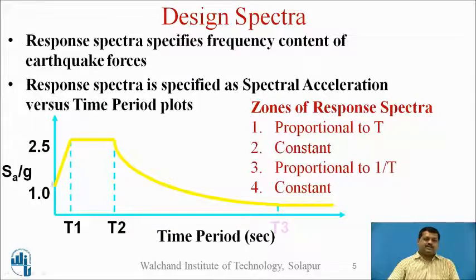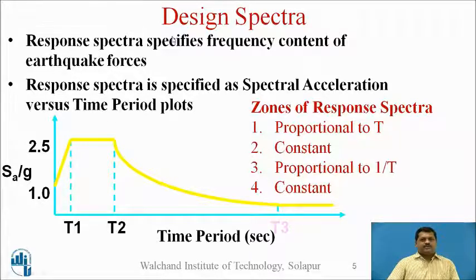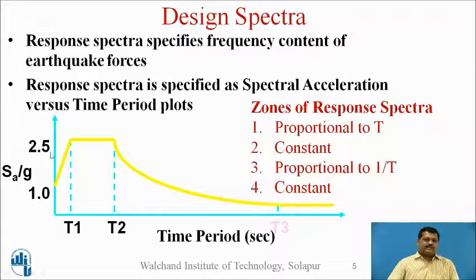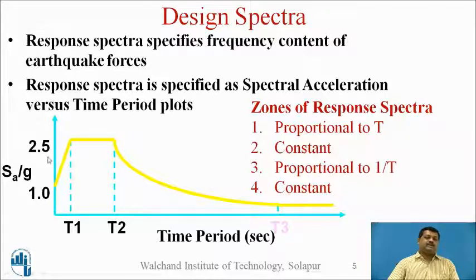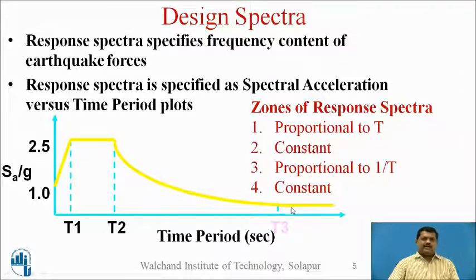Now let us see this design spectra. This design spectra is explained in IS 1893, and for the equivalent static method the design spectra is given. In the earlier code IS 1893-2002, only one spectra was given. Now this response spectra specifies the frequency content of the earthquake forces. The response spectra is specified as spectral acceleration versus time period. The plot has SA/g on the y-axis and time period of the building in seconds on the x-axis. Based on the time period, we get the spectral acceleration coefficient. Initially there is a linear line, then a constant line at the highest value of SA/g, and then the curve is there and it is constantly reducing.